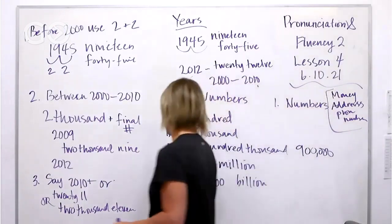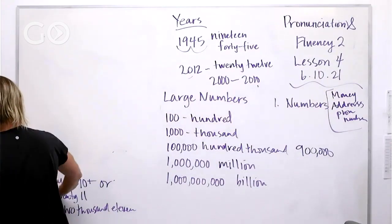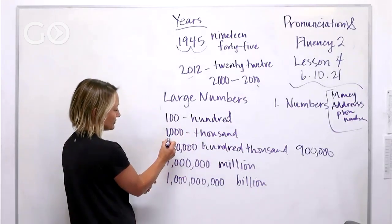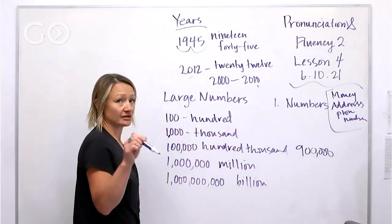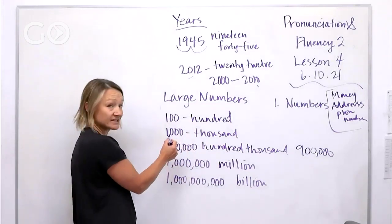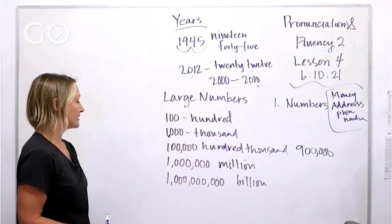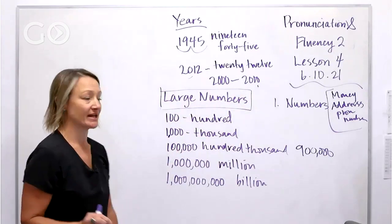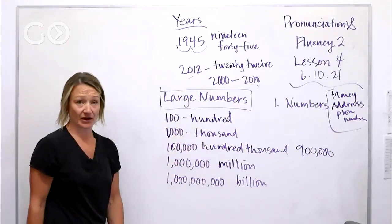Now let's look at larger numbers — things can get a little crazy here, but there is a trick. In American English, we use commas after every three digits. Every time you see a comma, you name what comes before it. So one comma means 'thousand,' giving you 'one thousand,' and one hundred thousand works the same way.